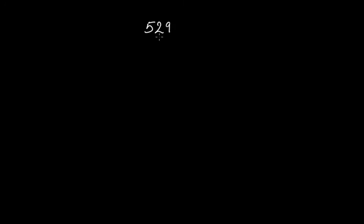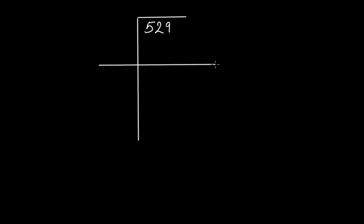Next example: 529 — yes, 529 is a square number. Let's find its square root. Draw a horizontal line, a vertical line, and another horizontal line. Make pairs and put a bar. We clearly have two bars, which means the square root will have 2 digits. Think of a number whose square is either equal to or less than 5. Put 2 here — 2 times 2 is 4. Subtract and you get 1.